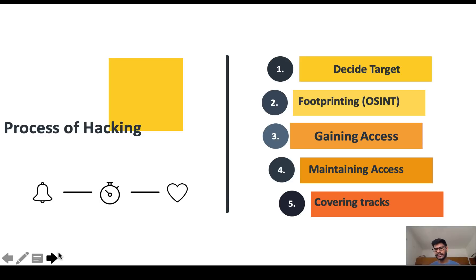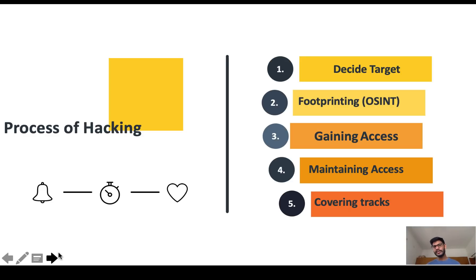The fourth step is maintaining access — this is crucial. After gaining access, you need to maintain it long-term, even for years. To do this, you install a backdoor. For example, if you've hacked a Facebook account, you add a hidden email, hidden password, and hidden mobile number to maintain permanent access. For computer systems, you might install a trojan horse or botnet.